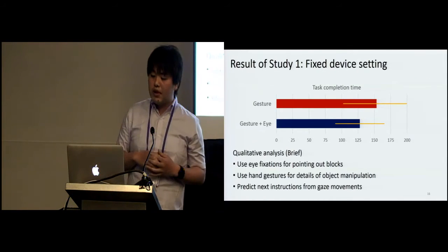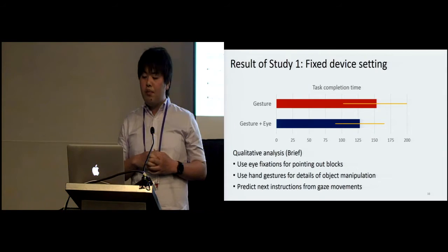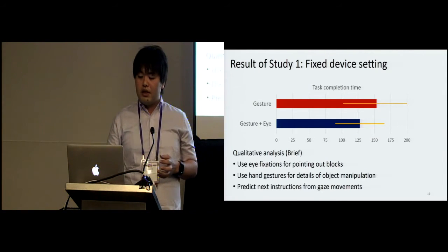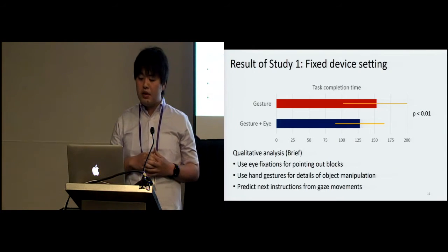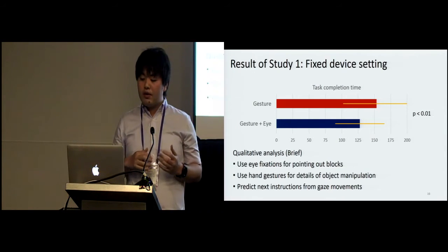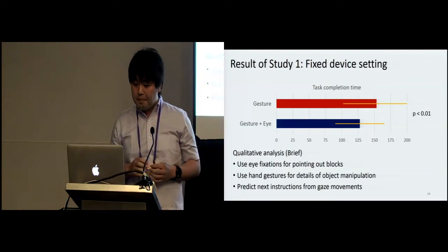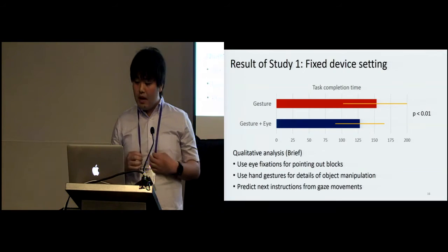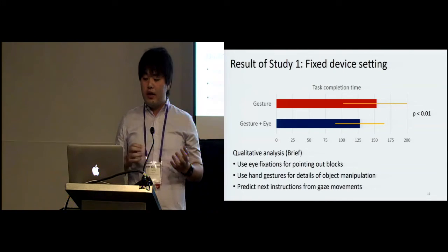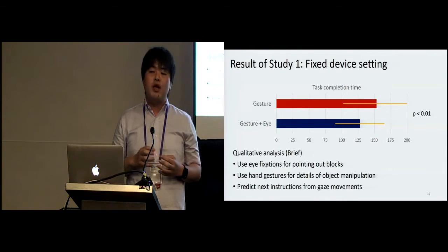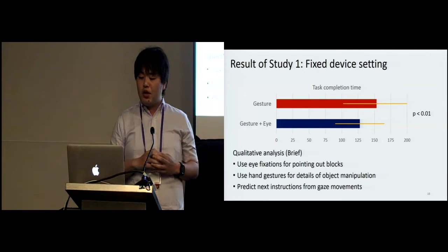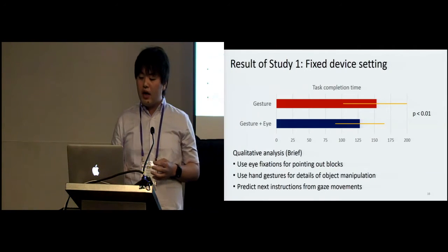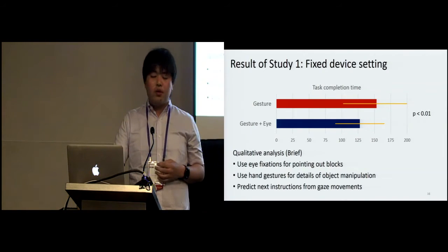The gesture and eye condition produced faster results than the gesture-only condition. Participants used eye fixations for pointing out blocks, and eye fixation allowed fast pointing because eye movement is very fast. We observed that hand gestures were used for describing object manipulation, such as how to attach a block. Some participants mentioned they could predict the target of the next instruction block from the eye movement on the workspace.